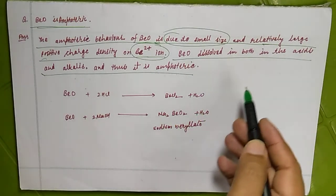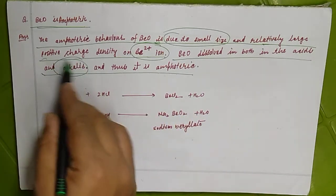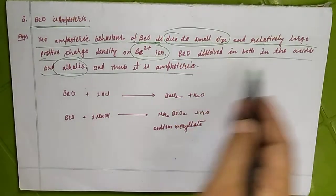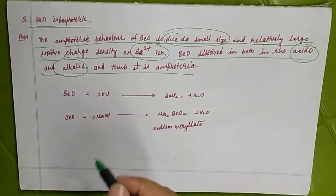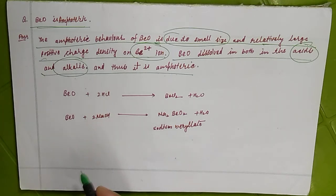That is why it can dissolve in both the alkali and acids also. That is why if anything is reacting with the alkalis and the acids, they are amphoteric in nature.